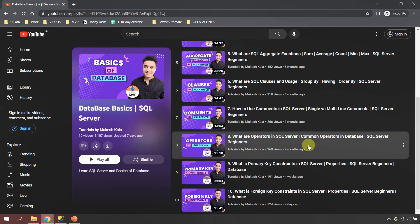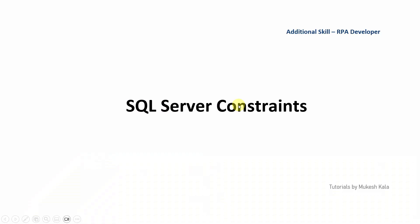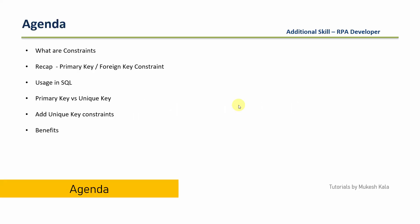Now in this playlist, we are covering something which is called constraints. We have already covered the primary key constraint and the foreign key constraint, and today we are going to see a new constraint which is called the unique key constraint. The link to all the videos and the playlist is available in the description. Talking of the agenda, we are going to start with what exactly are constraints, have a quick recap of primary versus foreign key, then see what exactly is unique key constraint, how to use it, how it differs from primary key, how to add it to an existing table, and lastly what are the benefits. Most of this we are going to see with a step-by-step demonstration in SQL Server.